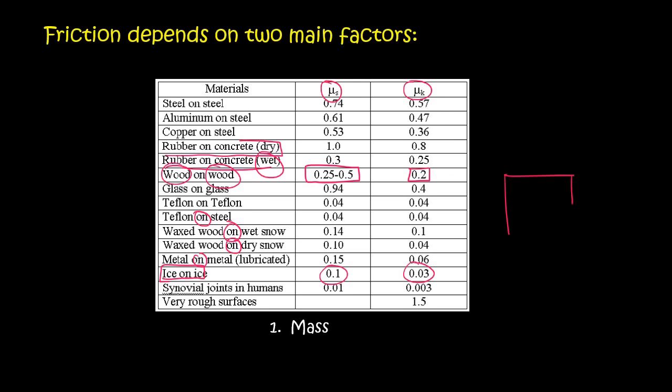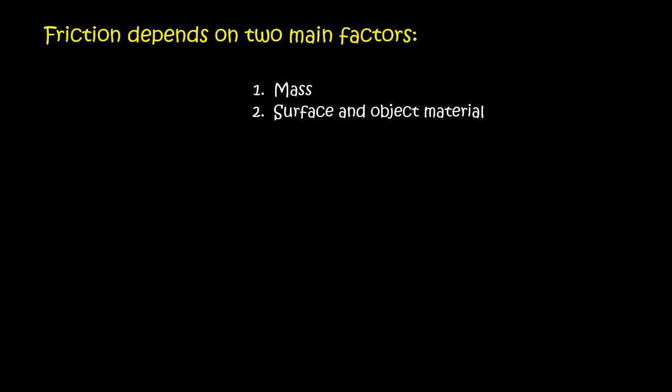You need to know, for example, the table and you need to know what the box is made of. And so the two main components, remember it's not actually going to be called mass, it's something else, but mass is a good way to think about it for now. So you need to think about how big or heavy the object is. And you also need to think about the surface and the object's material, so what the materials are made of.